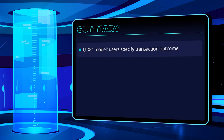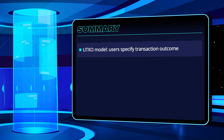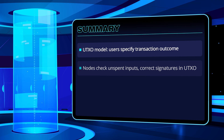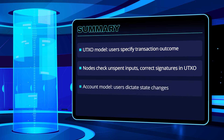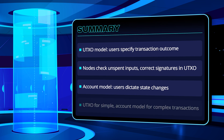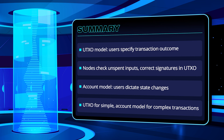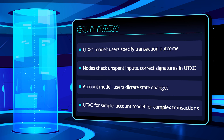Basically, the UTXO model is a way to verify transactions, where users specify what the outcome of the transaction should be. Nodes check if the inputs have not been spent before, and if the signatures are correct. On the other hand, the account model allows users to tell nodes how the state should change, and the network will compute the new state. A key takeaway is that the UTXO model is better when dealing with simple transactions, while the account model is beneficial when dealing with more complex logic.